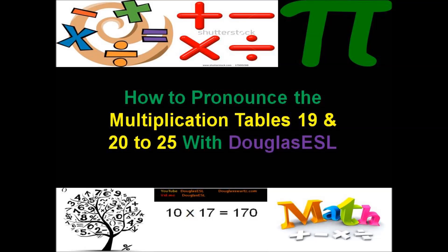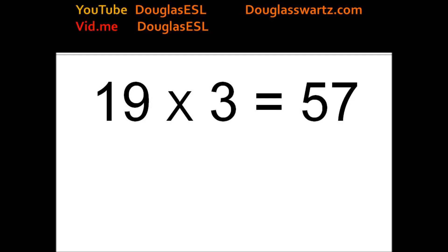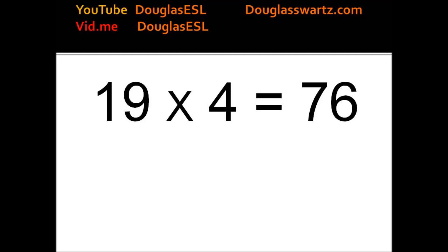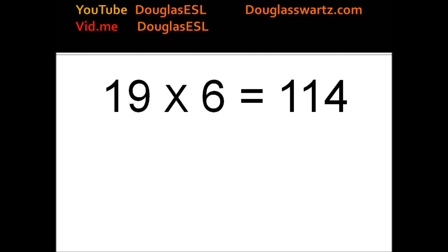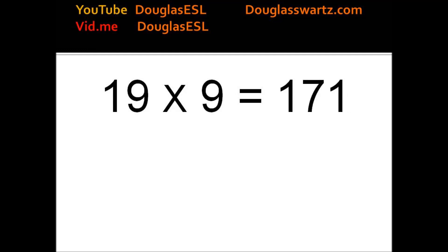How to Pronounce the Multiplication Tables 19 and 20 to 25 with Douglas ESL. 19 times 1 equals 19. 19 times 2 equals 38. 19 times 3 equals 57. 19 times 4 equals 76. 19 times 5 equals 95. 19 times 6 equals 114. 19 times 7 equals 133. 19 times 8 equals 152.